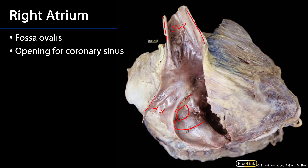In utero, there are two septa — a primary and a secondary septum — which are parted, and there is a space between them called the foramen ovale, the oval window, through which oxygen-rich blood coming from the placenta can pass from the right atrium to the left atrium, so that it may bypass the pulmonary circuit of circulation.